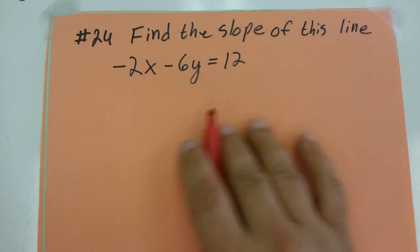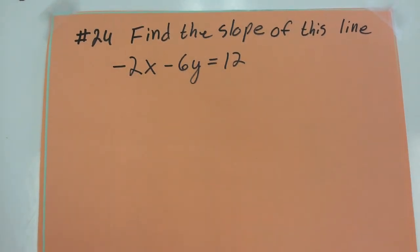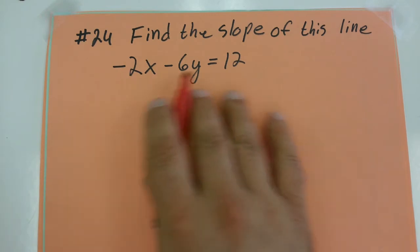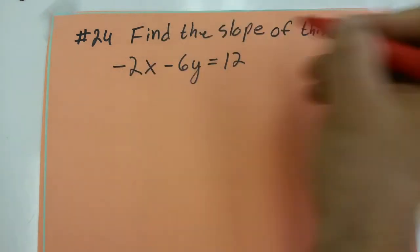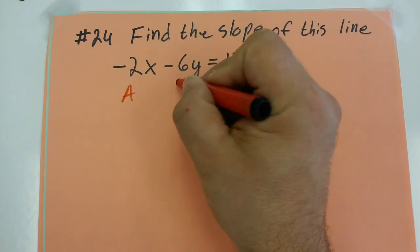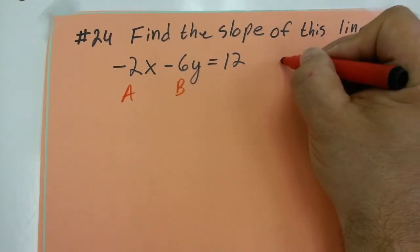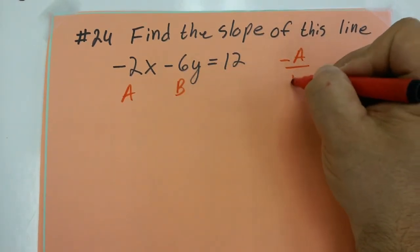Usually, you would add 2x to both sides and then divide both sides by negative 6. Basically, what I'm going to do is if this is A and this is B and this is C over here, the formula is negative A over B.